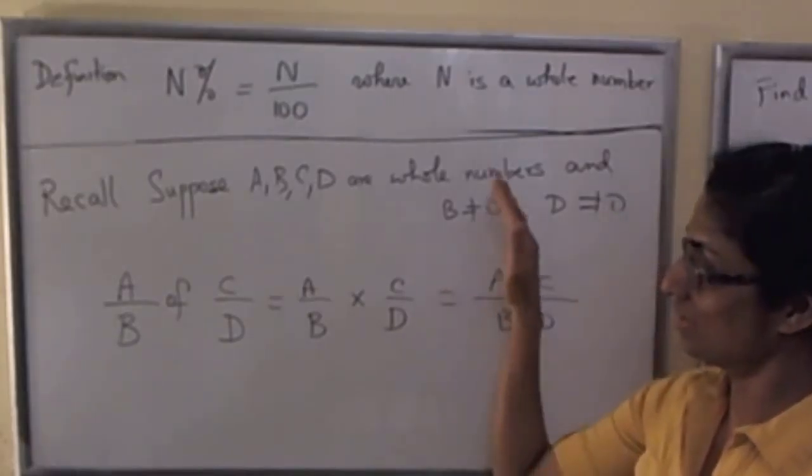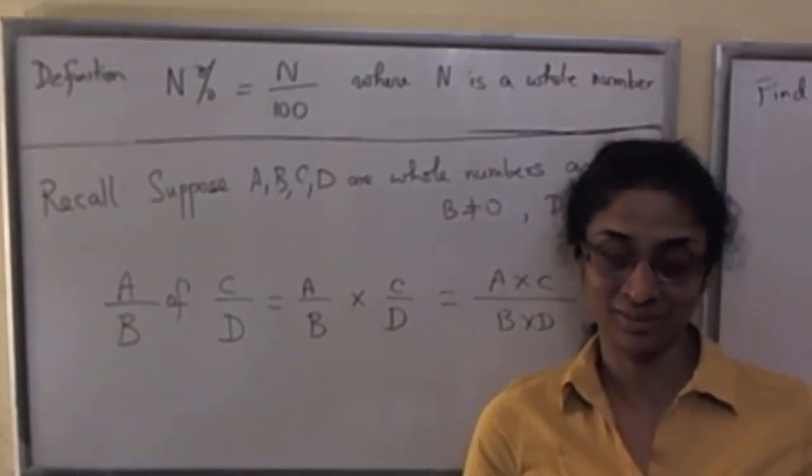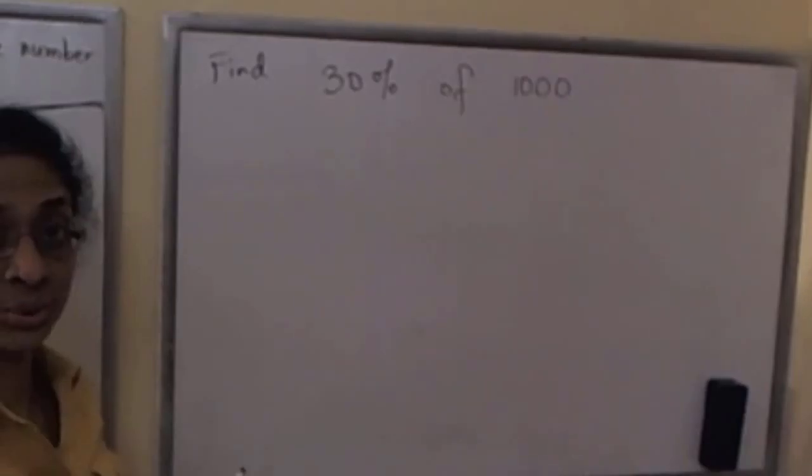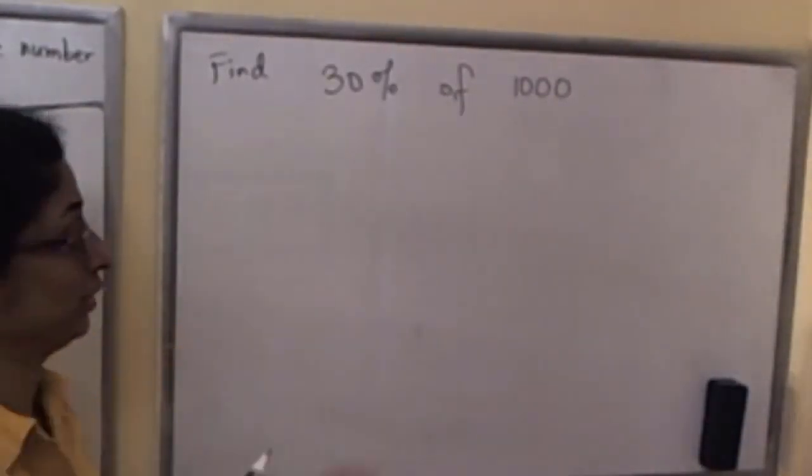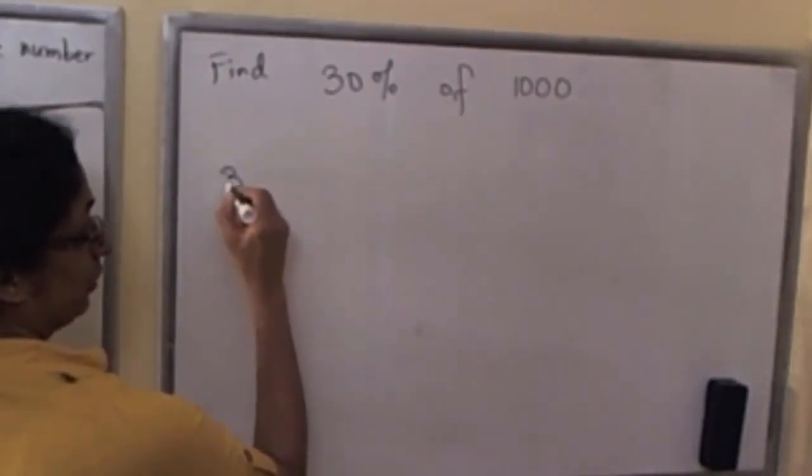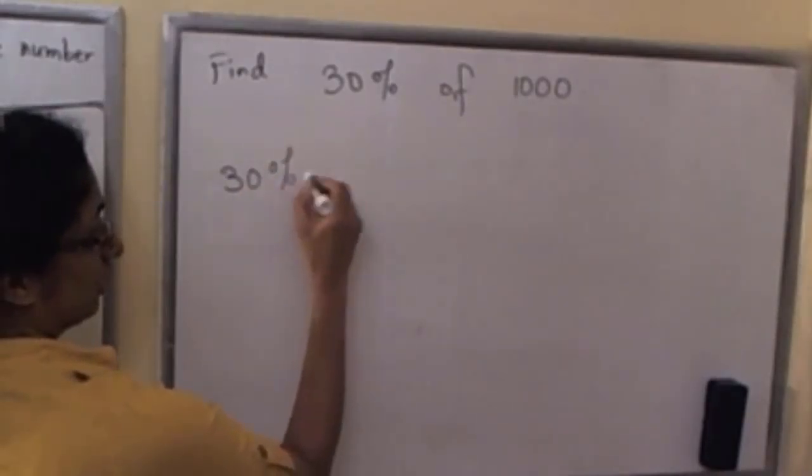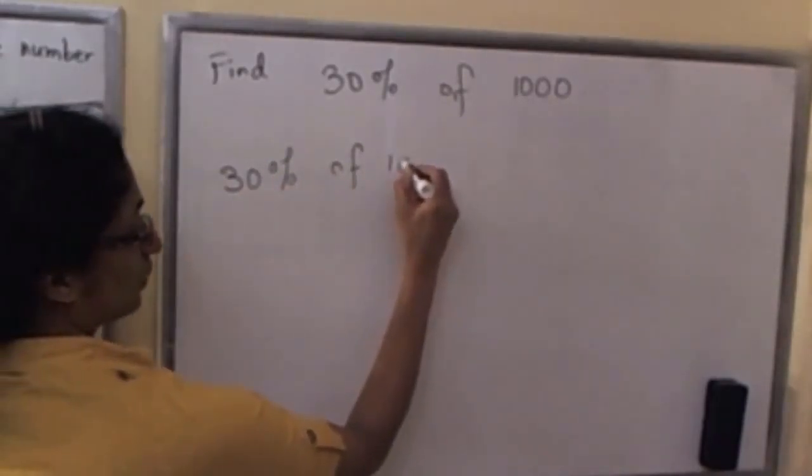Now keep these in mind as we go back and do the problem. So here we need to find 30% of 1000. So we write that out here: 30% of 1000.